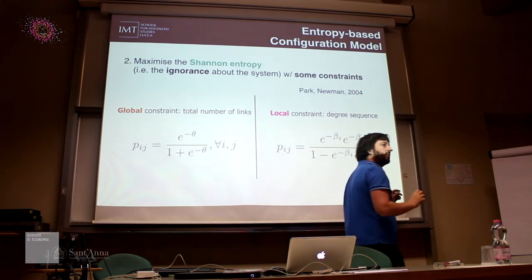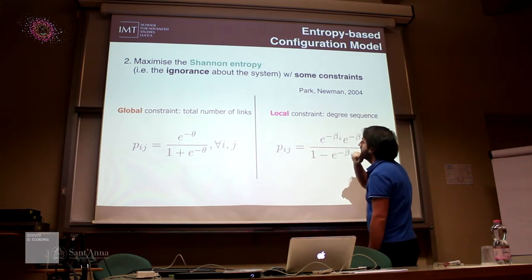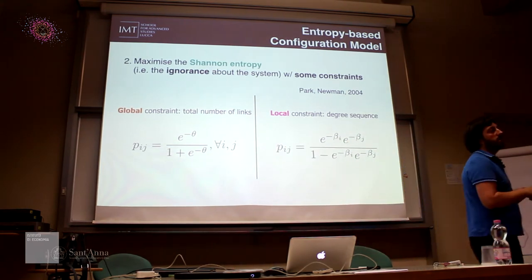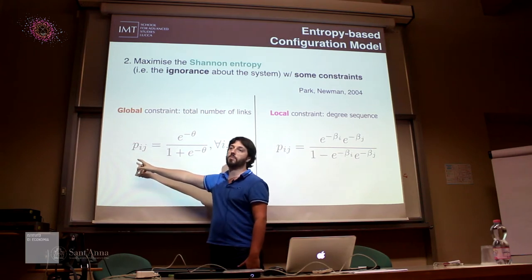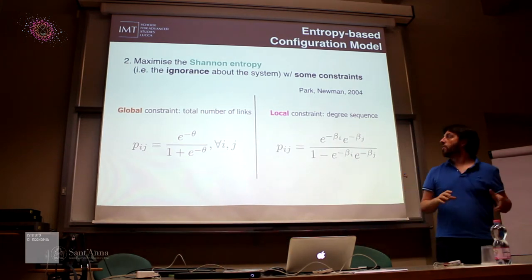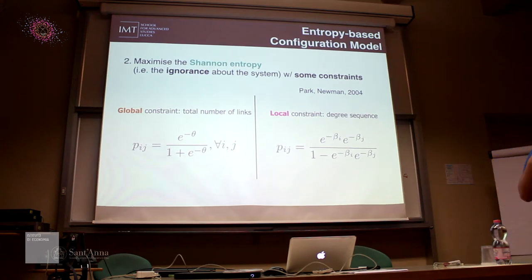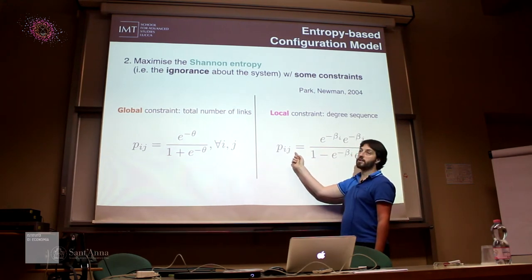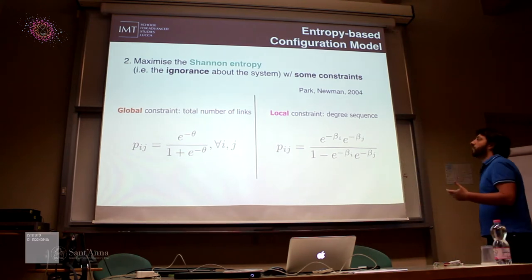The constraints are important. You can have global constraints, like in Erdős–Rényi, where the constraint is the total number of links, and then the probability per link turns out to be independent of the single nodes — so you forget about the heterogeneity of nodes. Or you can put local constraints. The easiest case is the degree sequence, that is the number of connections per node. Here you get something different: the probability of a link connecting i and j is related to quantities beta_i and beta_j, which are a sort of temperature per node.